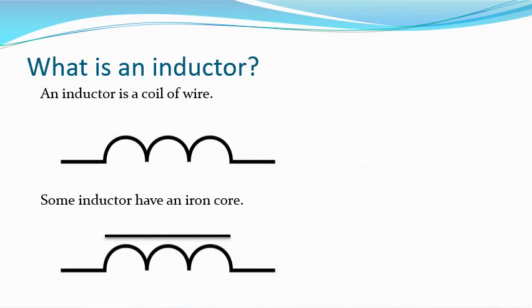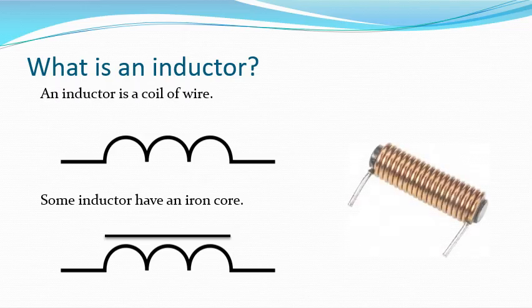So what is an inductor? An inductor is quite simply a coil of wire. It has a symbol you can see at the top, and some inductors have an iron core — to represent this with the symbol we put a line above the curves which indicate the coils of wire. So anything with coils of wire is an inductor, and there's a picture of one. They come in all sorts of different shapes and sizes.